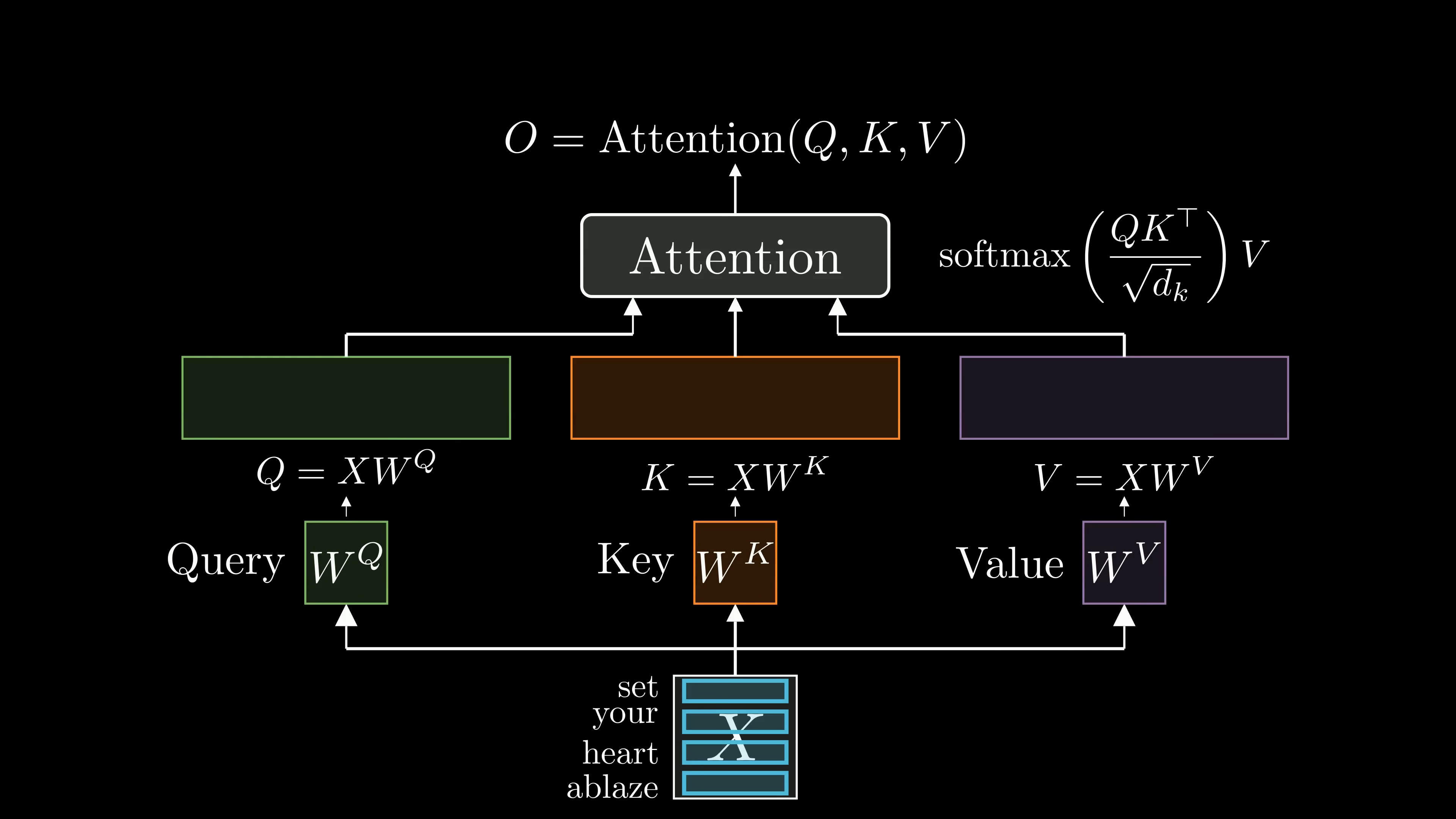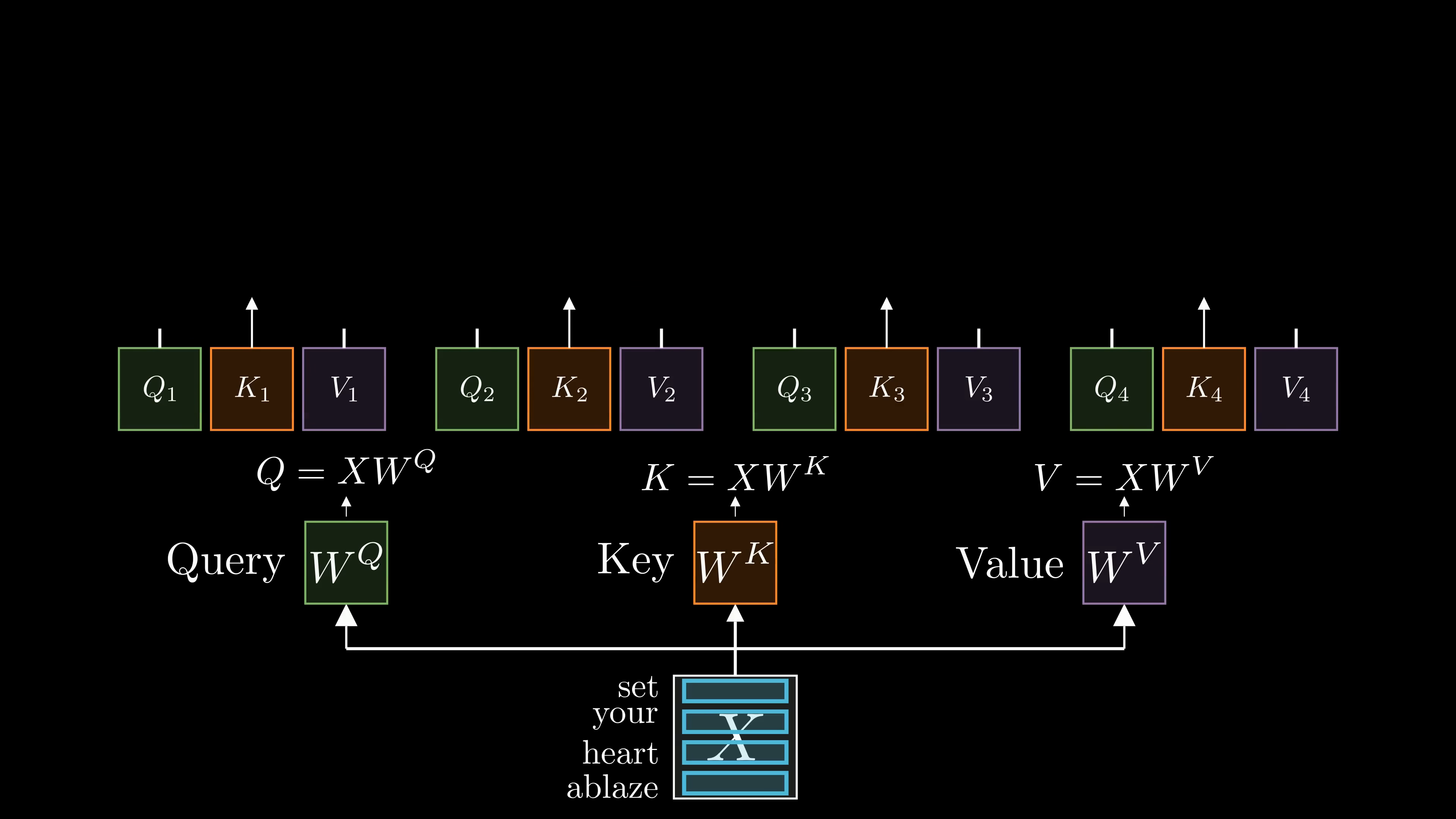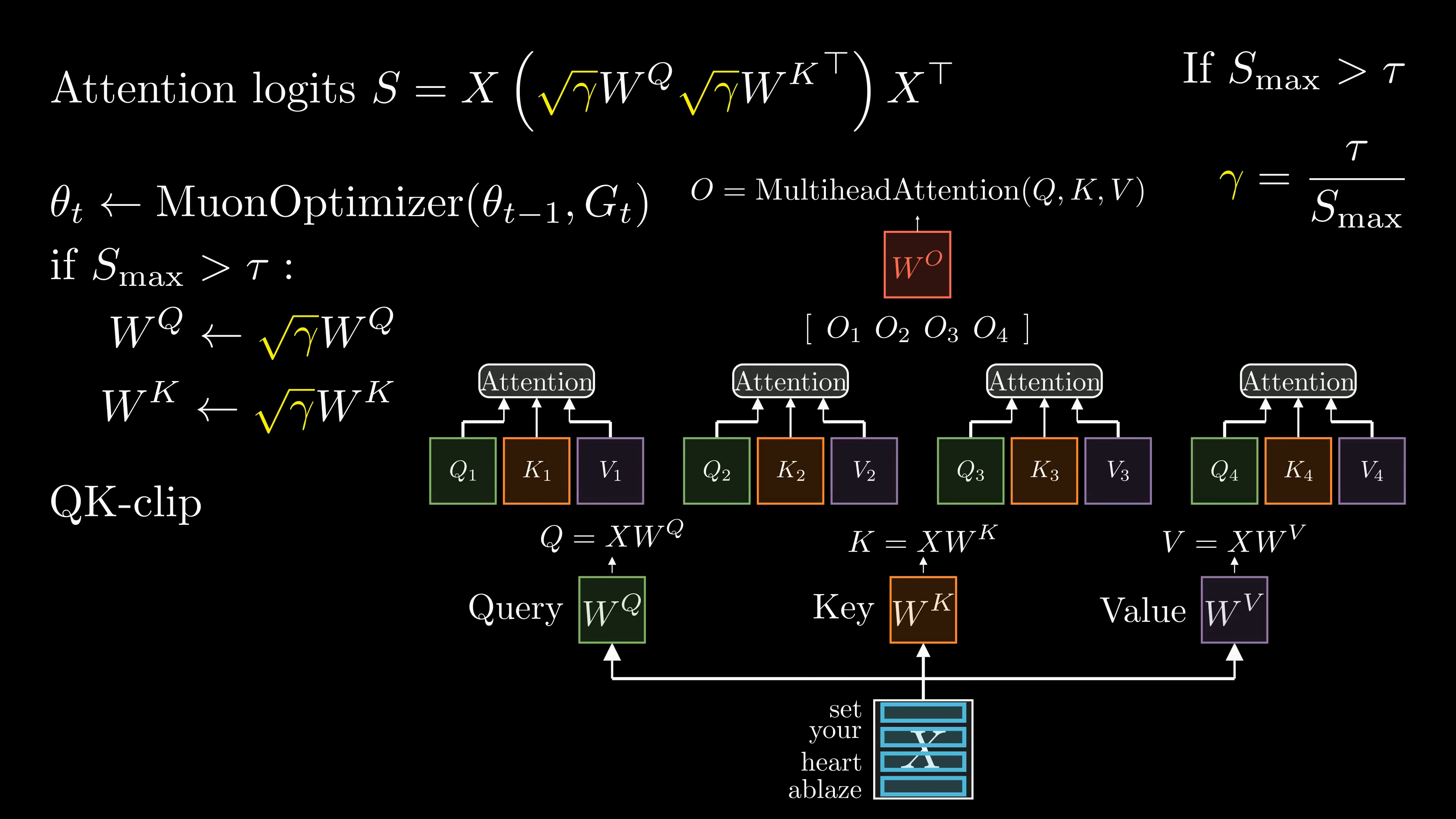This looks great. But in practice, self-attention consists of multiple heads. We achieve this by splitting the query, key, and value matrix into several heads, four in our example. For each head, we regroup q, k, and v, compute attention independently, and concatenate the outputs from all heads and project them with an output matrix wo. When the maximal attention logits go beyond the threshold, it does not make sense to rescale all the heads in the same way. Instead, we introduce an individual scaling factor for each head to control their logits separately.